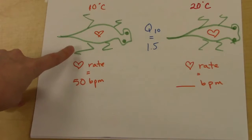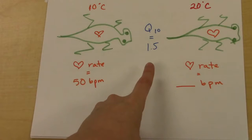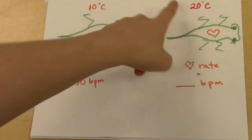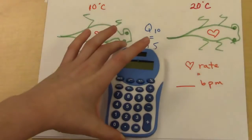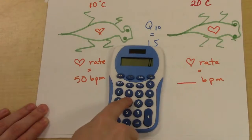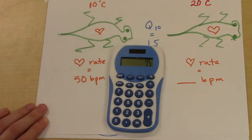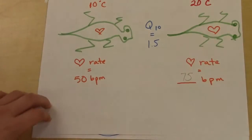Let's do a little practice. If our lizard has a heart rate of 50 beats per minute at 10°C and the Q10 is 1.5, what will the rate be when it's 20°C? We'll just do 50 beats per minute times the Q10 — the factor by which the rate changes with a 10 degree increase — and that gives us 75. So our new heart rate is 75 beats per minute if the Q10 is 1.5.